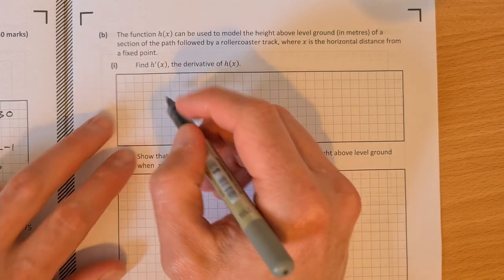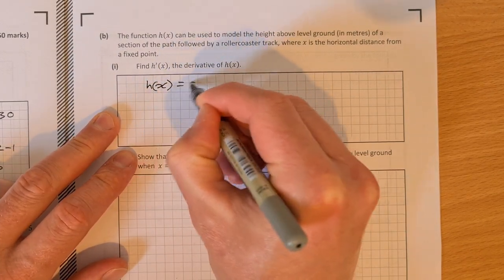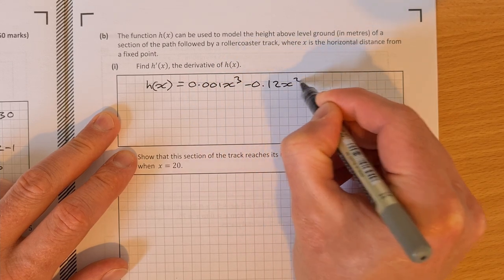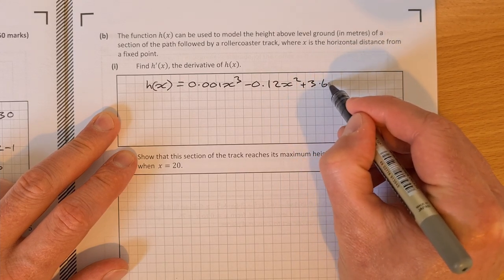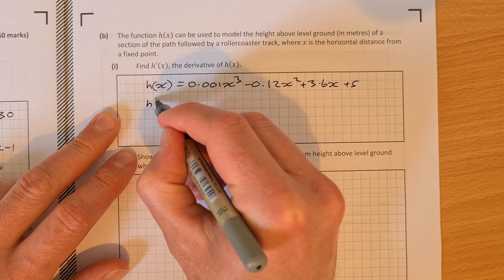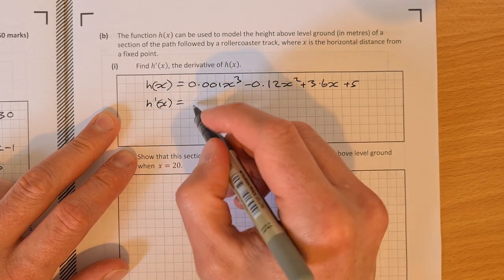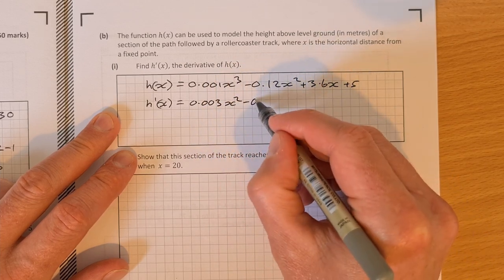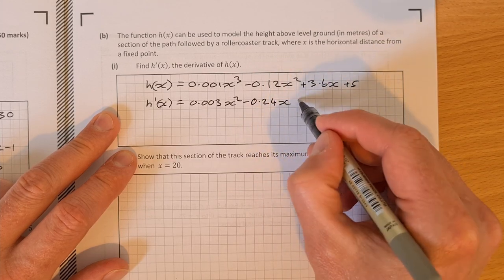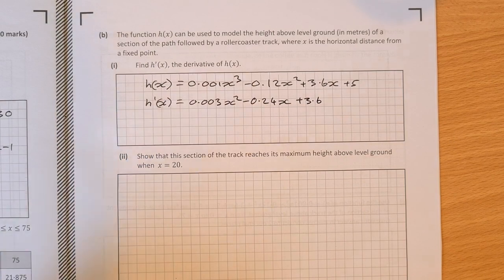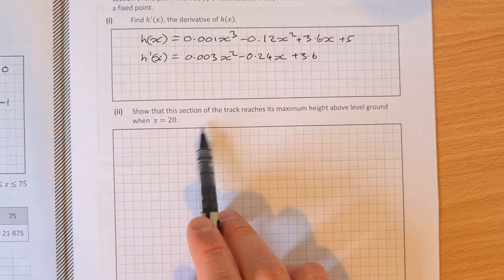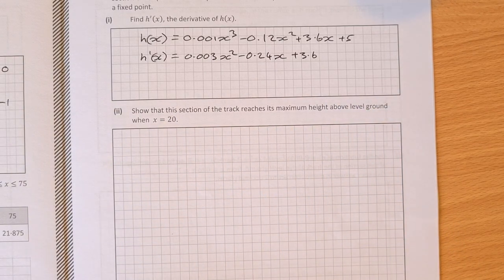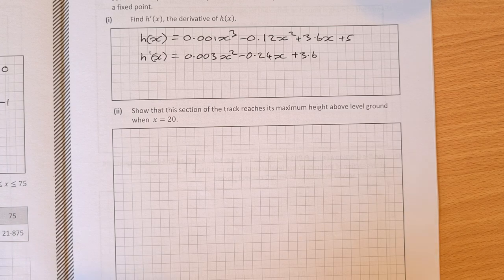So h of x is equal to 0.001x cubed minus 0.12x squared plus 3.6x plus 5. So to differentiate that, h prime of x is equal to, 3 by that, so 0.003x squared minus 2 by 0.12 is 0.24x and then plus 3.6. That's the derivative. Show that this section of the track reaches its maximum height above level ground when x is equal to 20.